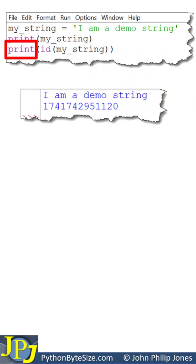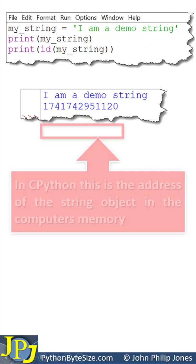Now, this line prints the ID of this variable, which is an object. Now, the ID can be seen here.